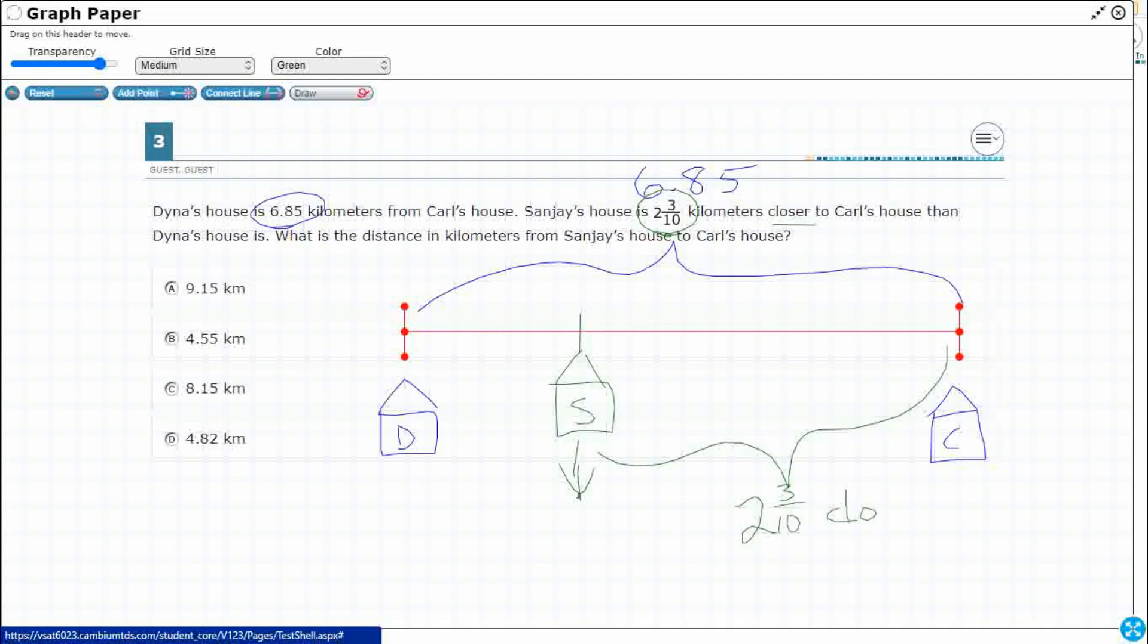So all we're doing here is we're really just comparing. Sanjay's house is closer to Carl's house than Dinah's house is. How much closer? 2 and 3 tenths closer. So we need to compare this 6 and 85 hundredths with this 2 and 3 tenths.